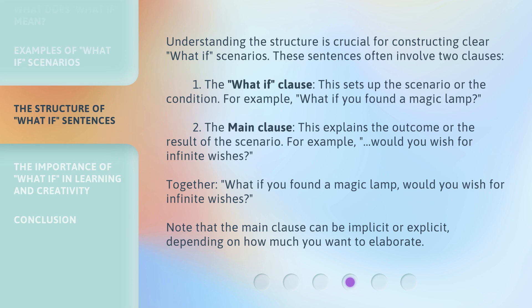Understanding the structure is crucial for constructing clear What-If scenarios. These sentences often involve two clauses. One: the What-If clause, which sets up the scenario or condition — for example, 'What if you found a magic lamp?' Two: the main clause, which explains the outcome or result — for example, 'Would you wish for infinite wishes?' Together: 'What if you found a magic lamp? Would you wish for infinite wishes?' Note that the main clause can be implicit or explicit, depending on how much you want to elaborate.